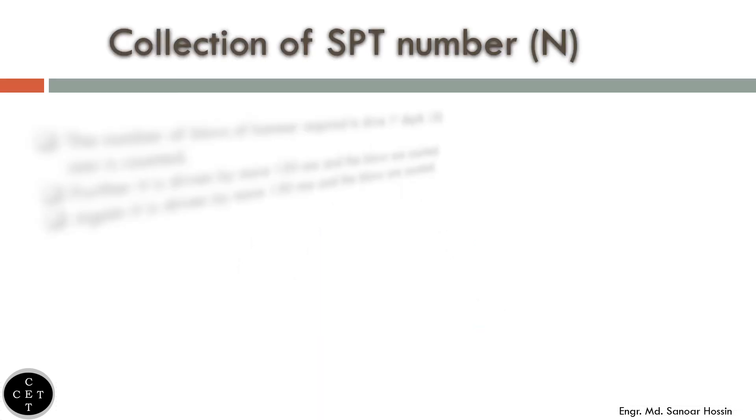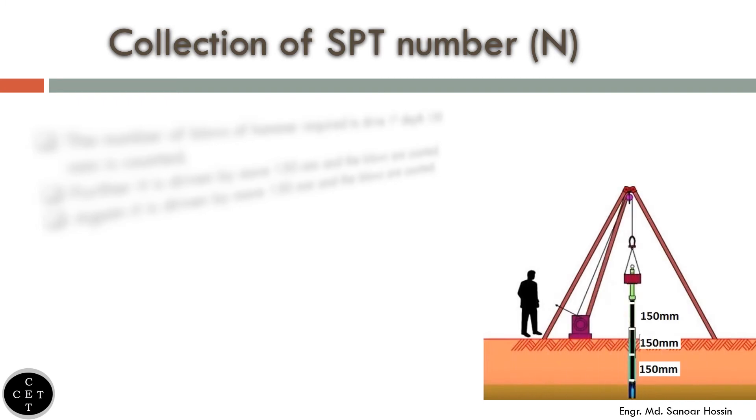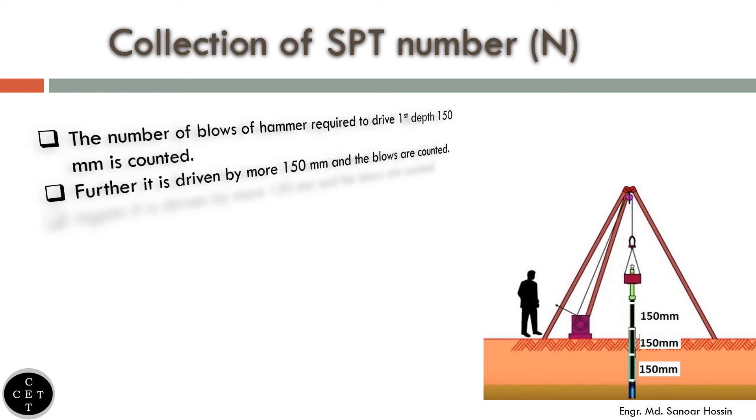We have to collect the number of hammer blows carefully during penetrating. We will collect the number of hammer blows in three stages. The number of blows required to drive the first 150 millimeters is counted. Further it is driven by another 150 millimeters and the blows are counted again. It is driven by another 150 millimeters and the blows are counted.